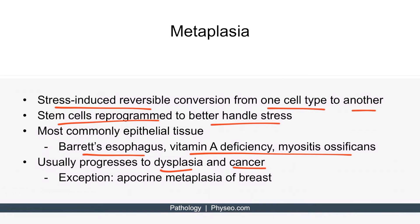Another classic and high-yield example is Barrett's esophagus, which is seen in chronic gastroesophageal reflux disease, or GERD. Other high-yield examples include vitamin A deficiency and myositis ossificans. In chronic GERD, acid goes from the stomach up into the esophagus, and over time the esophageal tissue undergoes metaplasia — known as Barrett's esophagus. If this goes unchecked, it can eventually progress to dysplasia and finally esophageal adenocarcinoma. One high-yield exception: apocrine metaplasia of the breast refers to fibrocystic changes of the breast and has no significant increased risk of progression to cancer.